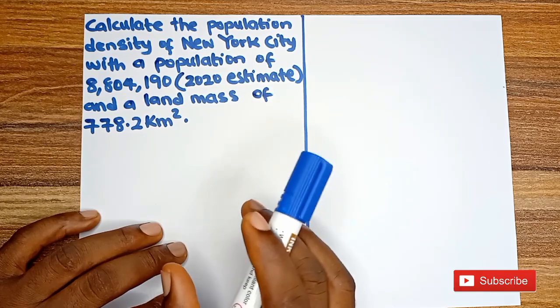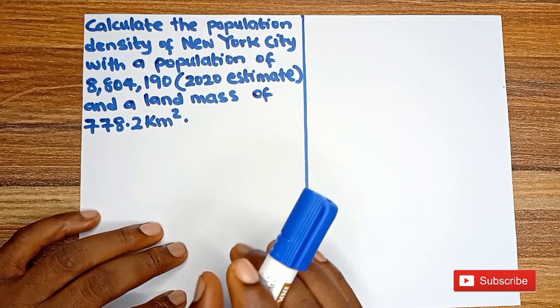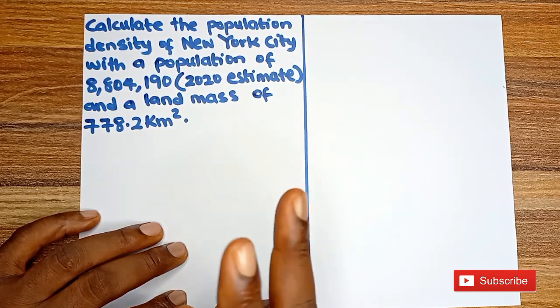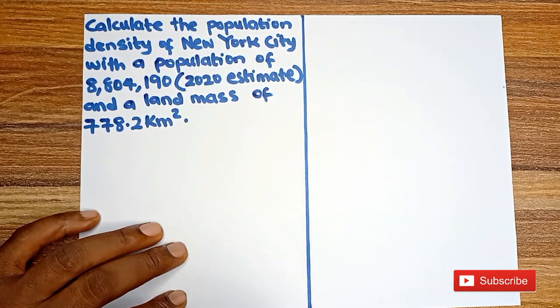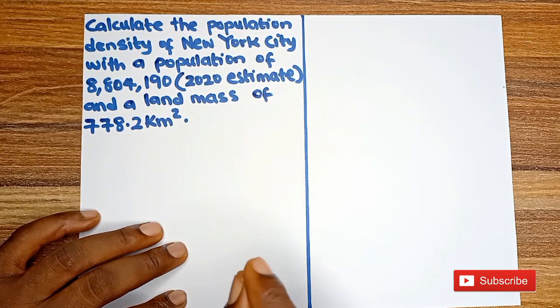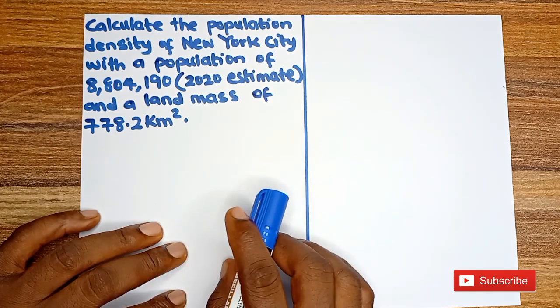So population density of a given place is the number of people in that geographical location. For us to calculate population density there are two requirements. There are two things we must know. The first is we must know the population of the people and we must know the size of the place.